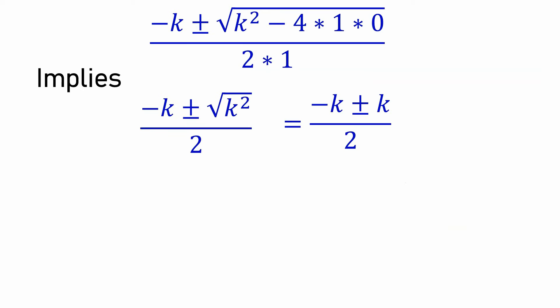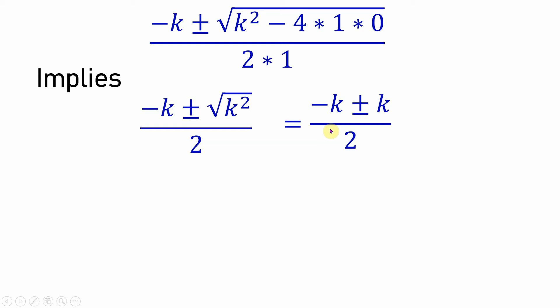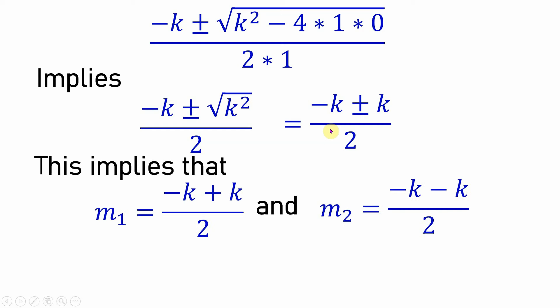Simplifying: since 4·1·0 = 0, we have m = (−k ± √(k²)) / 2 = (−k ± k) / 2. So we have two roots: m₁ = (−k + k)/2 and m₂ = (−k − k)/2.